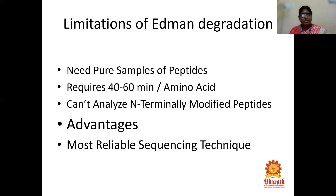Limitations of the Edman degradation method include: it requires pure samples of peptides, it takes 40 to 60 minutes per amino acid, and it cannot analyze N-terminally modified peptides. However, its main advantage is that it is the most reliable sequencing technique — more reliable than C-terminal or other N-terminal degradation methods.